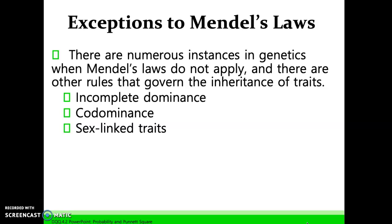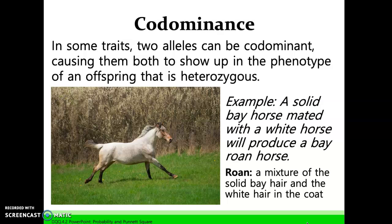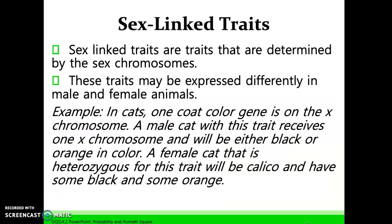There are numerous instances in genetics when Mendel's laws do not apply, and other rules govern the inheritance of traits, including incomplete dominance, co-dominance, and sex-linked traits. Incomplete dominance is a blending that occurs in heterozygous individuals — for example, red bulls bred to white cows may produce a brown offspring with white spots. In co-dominance, two alleles can both show up in the phenotype of a heterozygous offspring — for example, a solid bay horse mated with a white horse produces a bay roan horse with mixed solid bay and white hair. Sex-linked traits are determined by the sex chromosomes and may be expressed differently in males and females — in cats, one coat color gene is on the X chromosome, so a male cat will be either black or orange, while a heterozygous female cat will display both colors.